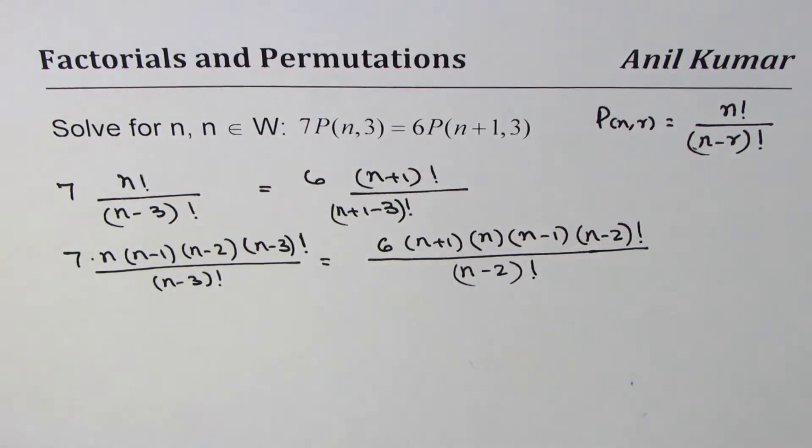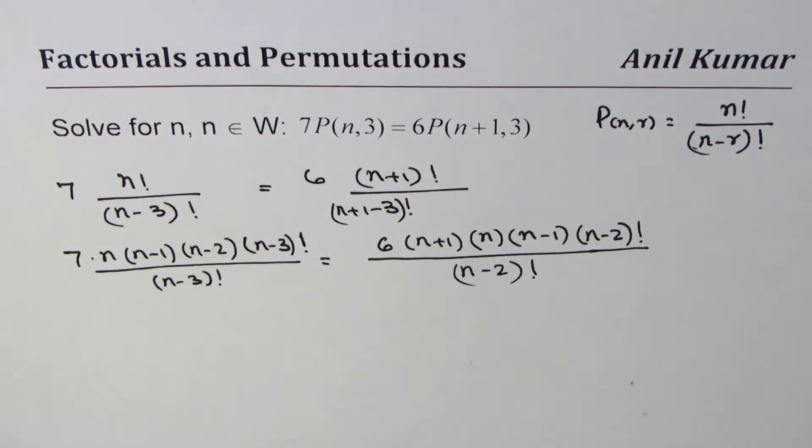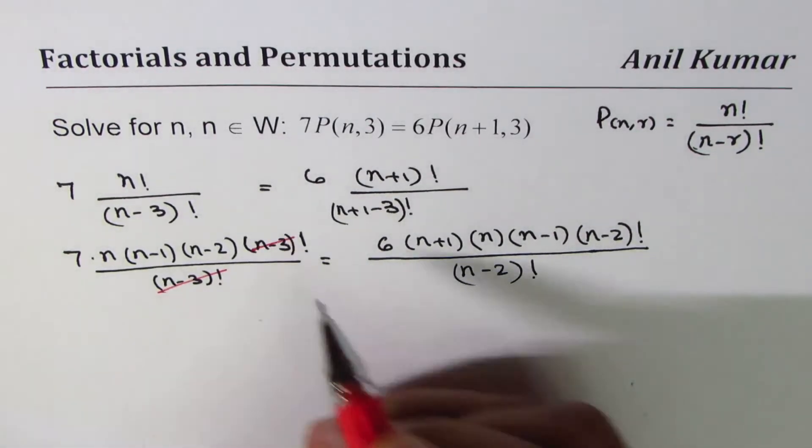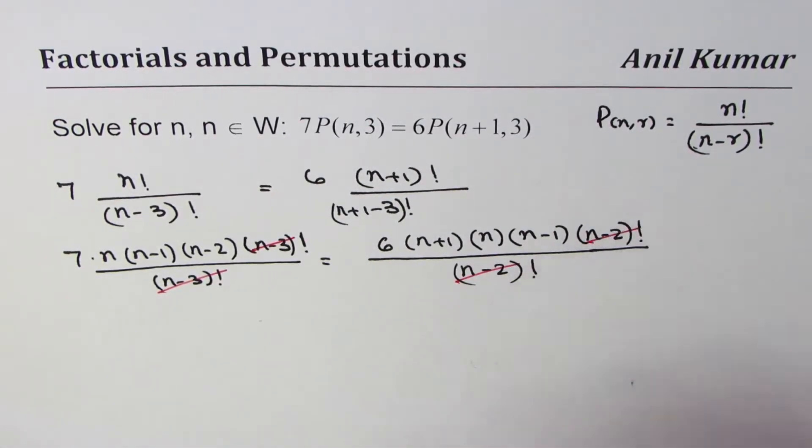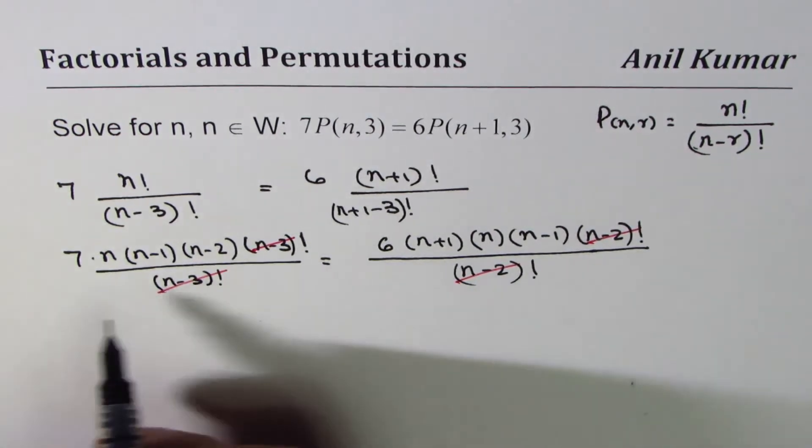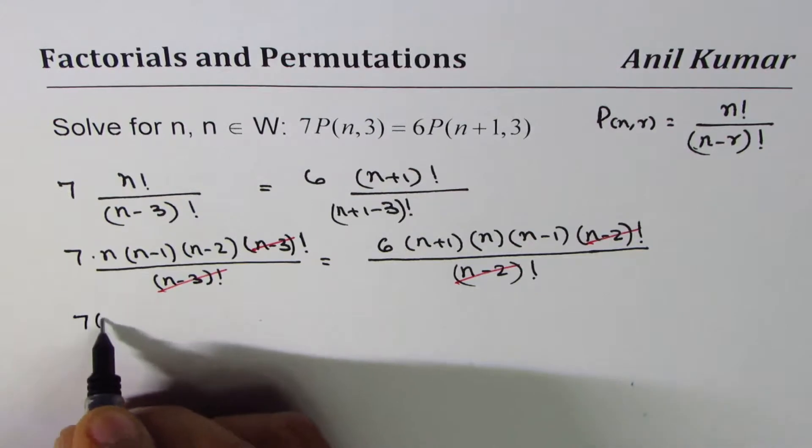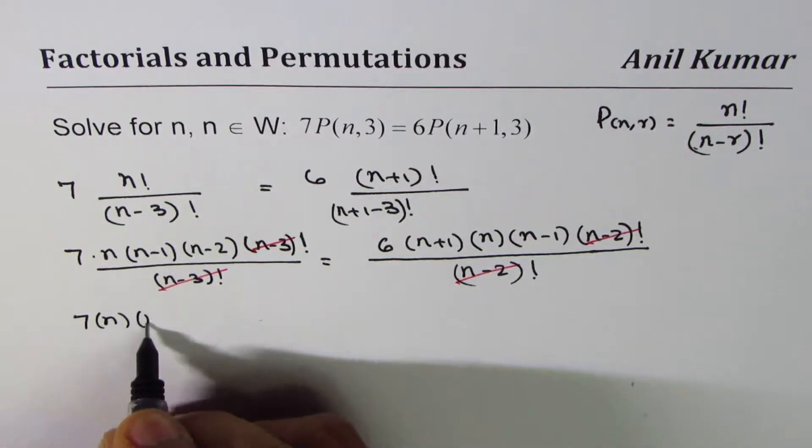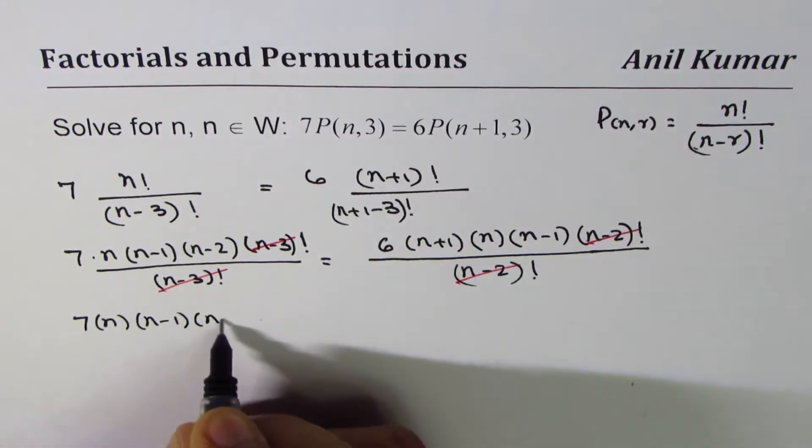So that is how we could write it. Now we can cancel the common terms from numerator and denominator. That simplifies to 7 times n times (n-1) times (n-2) equals 6 times (n+1) times n times (n-1).